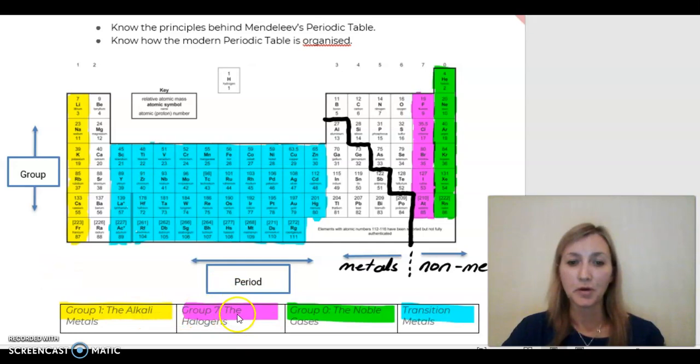I then chose this purple colour for the Group 7 and they're called the Halogens, and again I highlighted those Group 7 in the Periodic Table. I also chose green for Group 0, the Noble Gases, which I highlighted on the right-hand side vertical column of my Periodic Table.